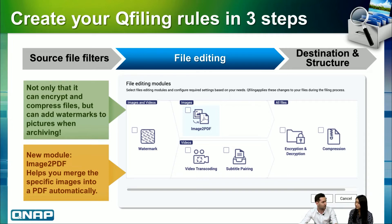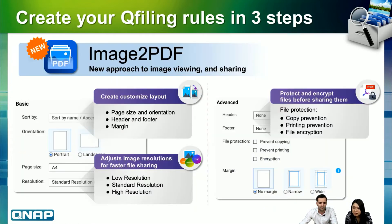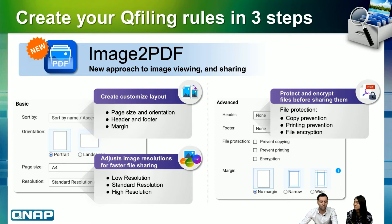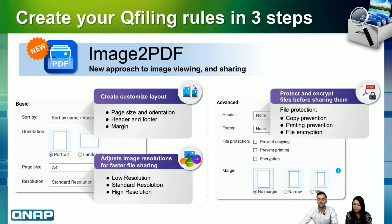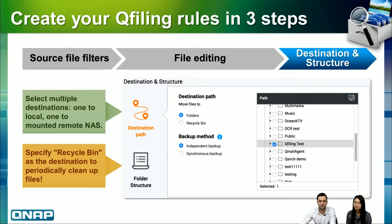Let's see the Image to PDF feature. The basic function lets you create a customized layout with size and orientation, set up headers, footers, and margins, and adjust the resolution of the image. If you choose low resolution, the sharing speed will be faster — great when a customer just wants to check pictures quickly. The advanced condition provides file protection: you can prevent copying or printing the PDF, and also encrypt it.